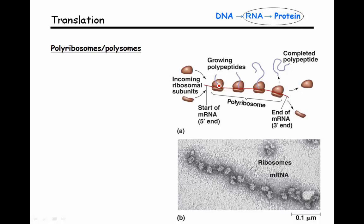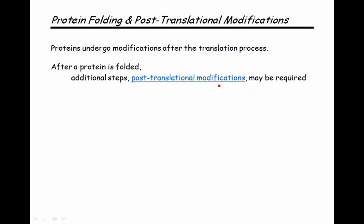Once proteins are made, they are not necessarily functional at that moment. Protein folding — getting to the correct three-dimensional shape — is extremely important. After translation, a number of modifications have to take place, one of them being the folding process. Go back to chapter five to review the different levels of protein folding: primary structure, secondary structure, tertiary, and quaternary structure. All of those are very important for a protein to become functional. These are called post-translational modifications because they take place after translation.